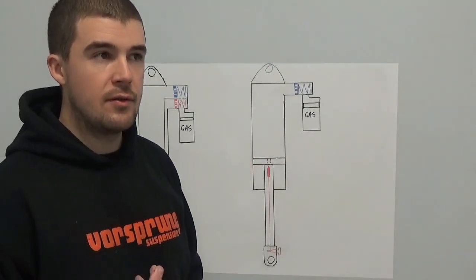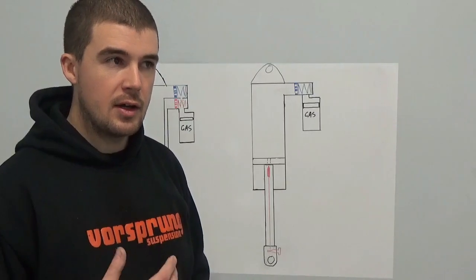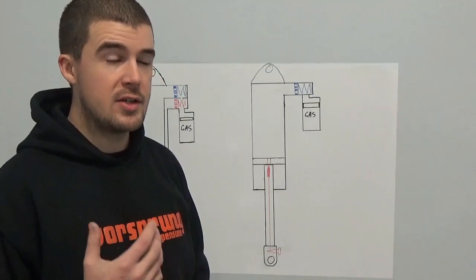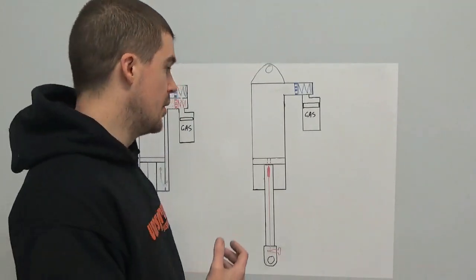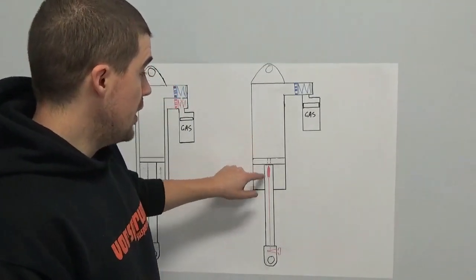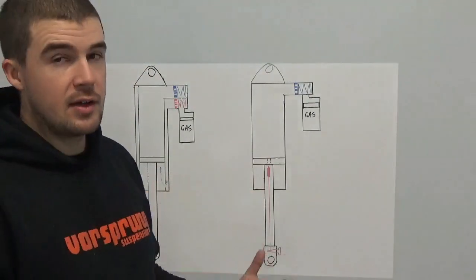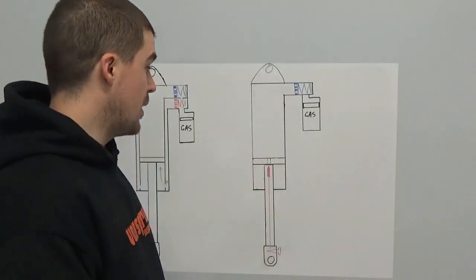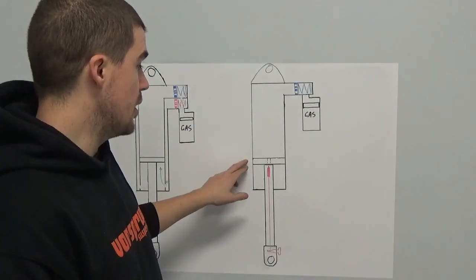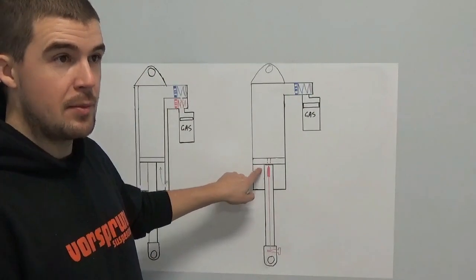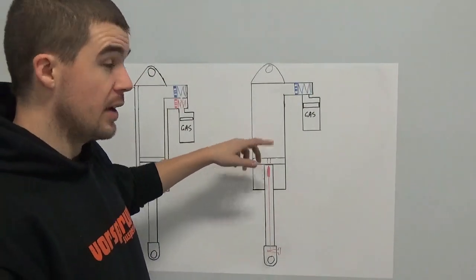Cavitation I very commonly hear incorrectly described as foaming of the oil. That isn't what it is. Cavitation is a purely dynamic effect. That is a possible consequence of a particular configuration of that damper. As a result, a lot of production dampers in the mountain bike world have a very lightly valved main piston so that isn't really a risk.